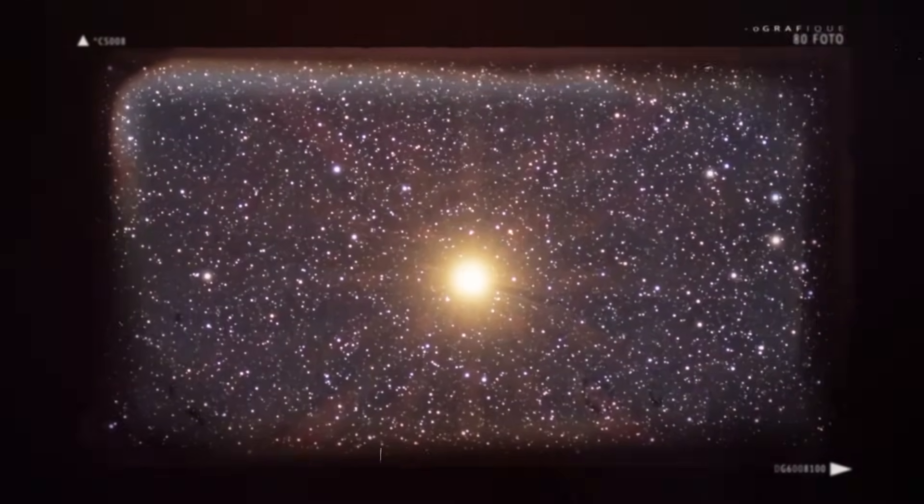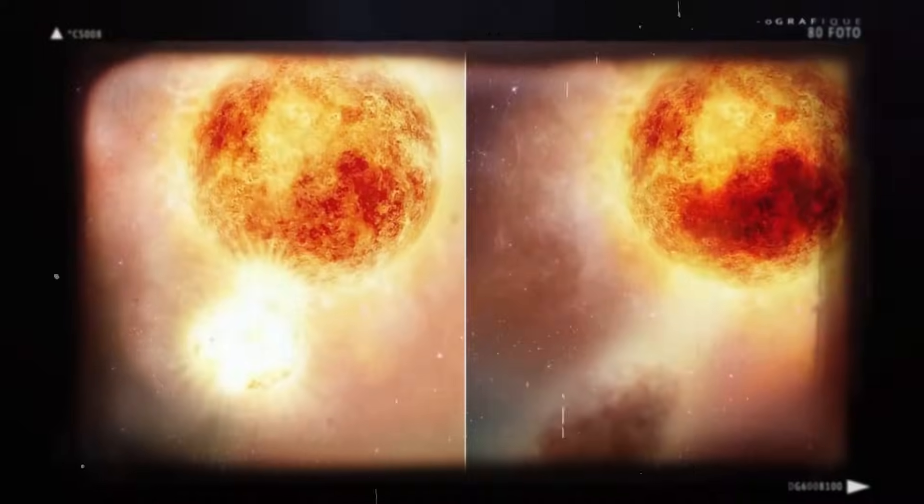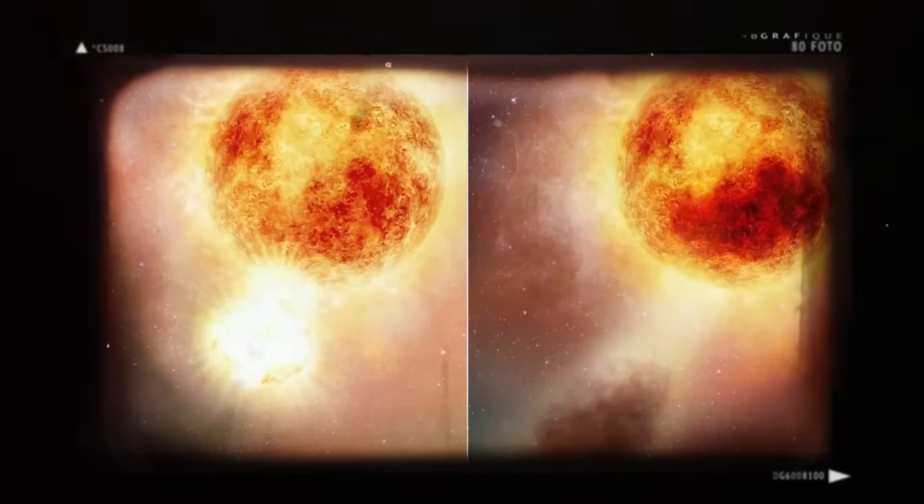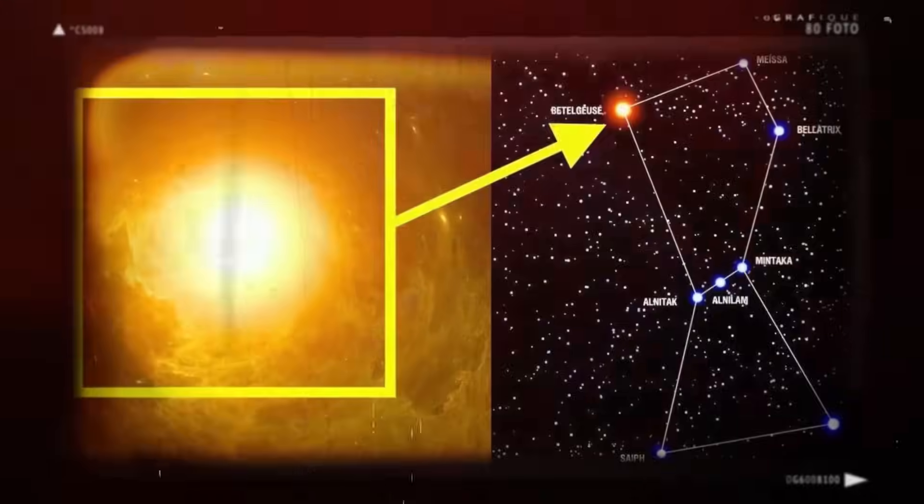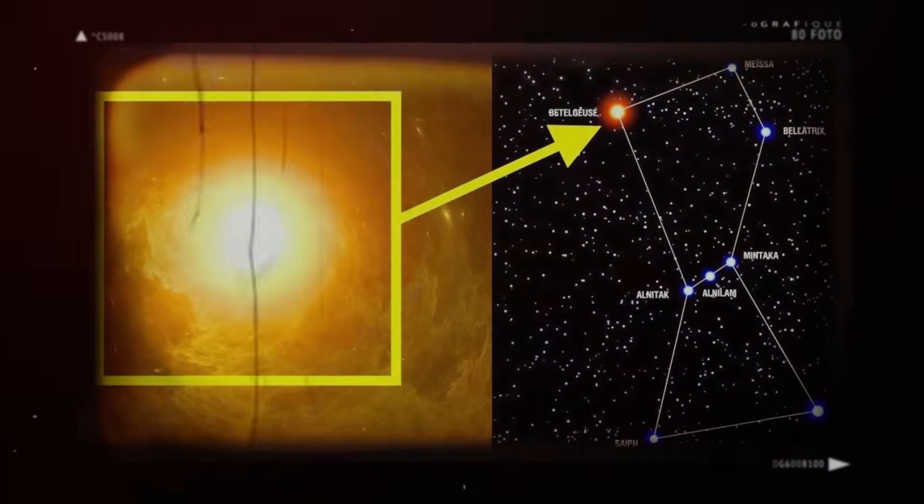The reason the supernova remains so bright for the first three months or so isn't even from the explosion itself, but rather from a combination of radioactive decays, from cobalt for example, and the expanding gases in the supernova remnant.